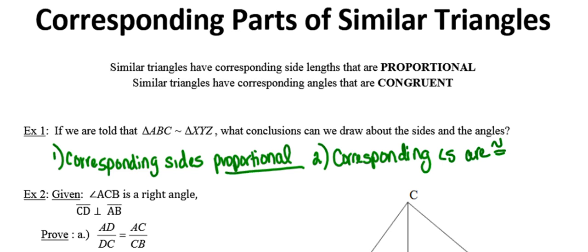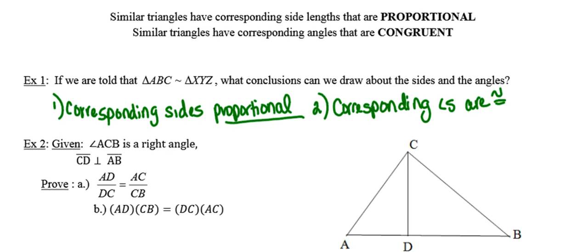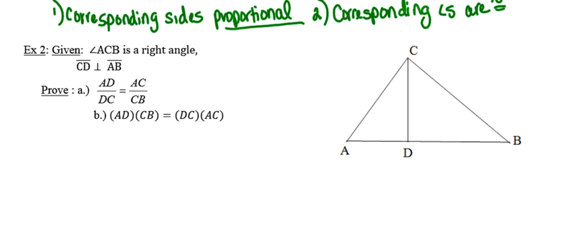Let's go ahead and jump right into the proof. In the givens, we're told that angle ACB is a right angle, so I'm going to go ahead and mark that in the diagram. We're also told that segment CD is perpendicular to segment AB, and I'm going to mark that in the diagram as well. They want us to prove that the ratio between AD and DC is the same as the ratio between AC and CB.